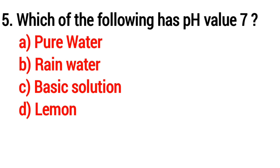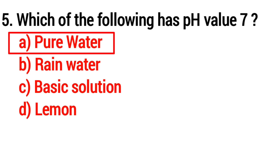Question 5. Which of the following has a pH value of 7? The answer is Option A: Pure water.